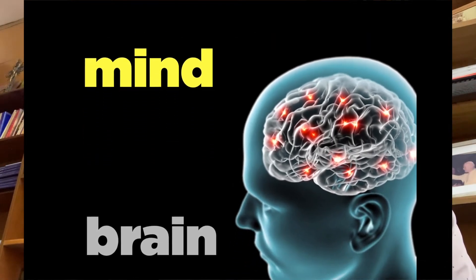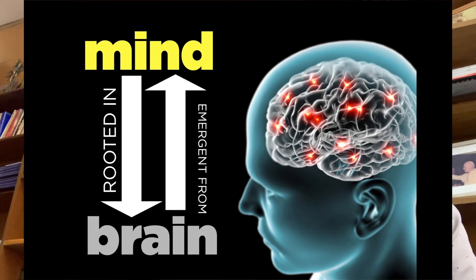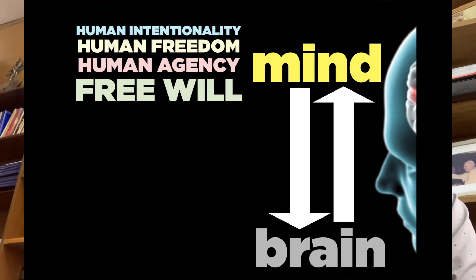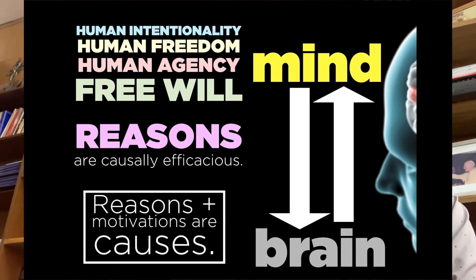No doubt, the mind is rooted in the human brain. Without a living brain, there can be no human mind. But according to the concept of ontological emergence, we have to assert that even if the mind is rooted in the brain, something else is going on in the mind that cannot be fully explained away by the brain. The mind is subject to physical and chemical laws, but it cannot be reduced to them. It is also subject to psychological laws, which cannot be exhausted by physics or chemistry. For this reason, call it what you like — human mind, human intentionality, human freedom, human agency, free will — for Bhaskar, all these are causally efficacious. Our reasons and our motivations are causes.